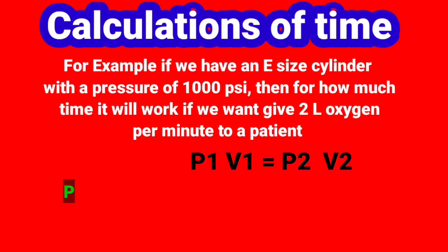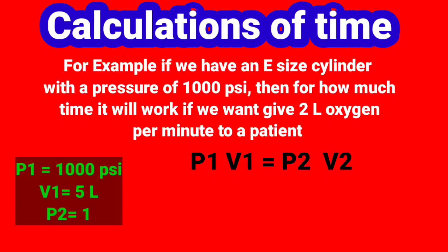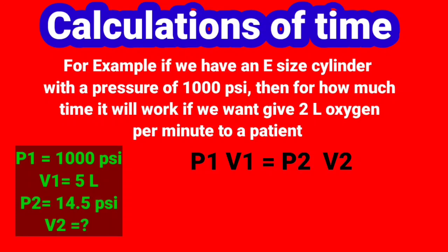Formula is P1 V1 is equal to P2 V2. P1 is equal to 1000 psi. V1 is equal to 5 liters, it is constant for E-size cylinder. P2 is equal to 14.5 psi, it is the atmospheric pressure, and V2 we want to find it. Now we will put these values in the above formula. Rearrange it: V2 is equal to V1 multiply by P1 divide by P2.